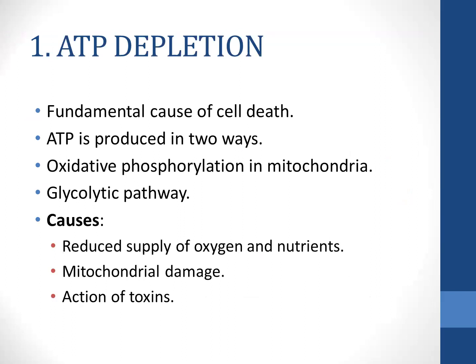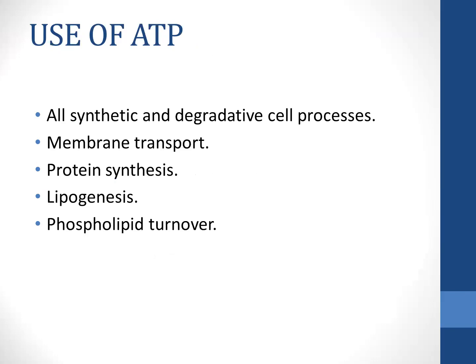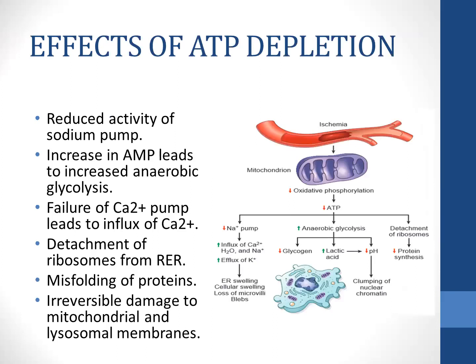ATP depletion occurs when there is hypoxia or ischemia — oxidative phosphorylation is decreased and anaerobic glycolysis starts. Causes include reduced supply of oxygen and nutrients, mitochondrial damage, and various toxins. ATP is normally used in all synthetic processes of the cell, membrane transport, protein synthesis, lipid synthesis, and phospholipid turnover. When ATP is depleted, there is reduced activity of the sodium-potassium pump, failure of the calcium pump leading to increased calcium influx, detachment of ribosomes from the rough endoplasmic reticulum, misfolding of proteins, and irreversible damage to the mitochondrial and lysosomal membranes.